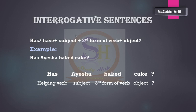Moving towards the interrogative sentences — in interrogative sentences we put the helping verb 'has' or 'have' first, then comes the subject, then the third form of verb, and then at the end the object. We also put a question mark at the end of every interrogative sentence. The example is: 'Has Aisha baked cake?' 'Has' is the helping verb, 'Aisha' is the subject, 'baked' is the third form of verb, 'cake' is the object, and there is a question mark at the end.